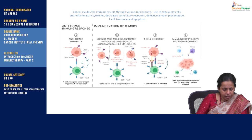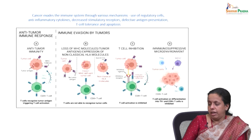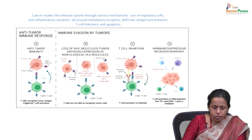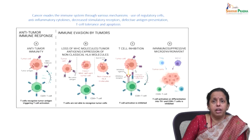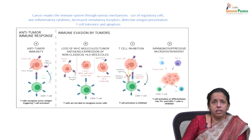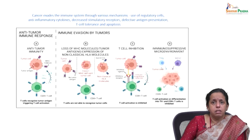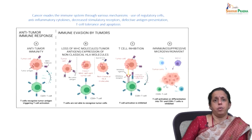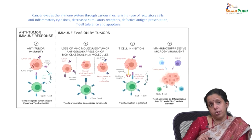T cell activation can be completely inhibited. T cells are inhibited by the involvement of inhibitory receptors and their corresponding ligands. Immunosuppressive cytokines suppress anti-tumor response, and regulatory T cells (Tregs) suppress the T cell response to tumors. Myeloid-derived suppressor cells accumulate and suppress anti-tumor T cell response — this is how the immune response is evaded.